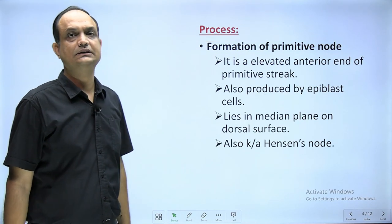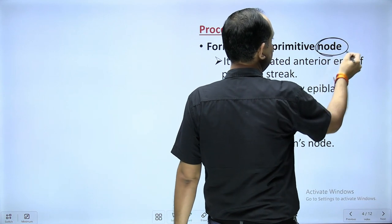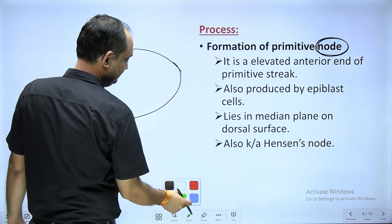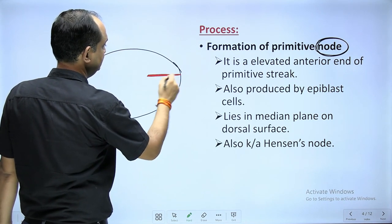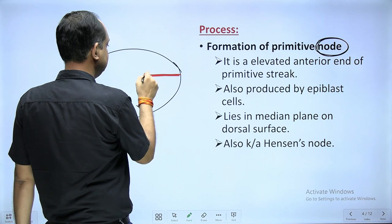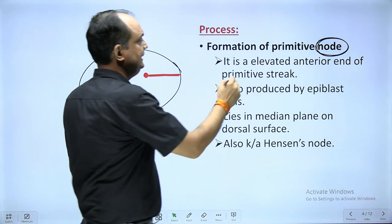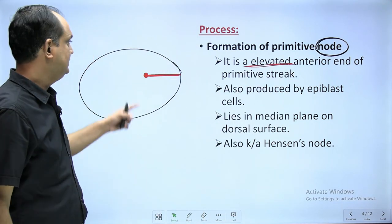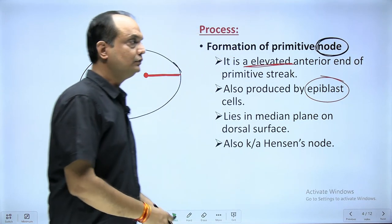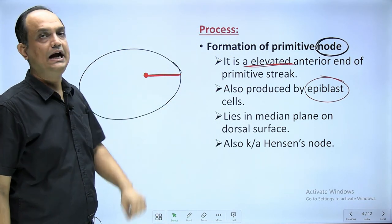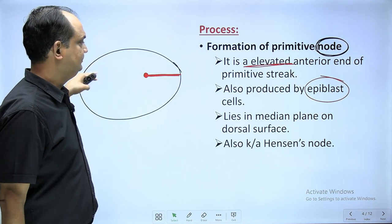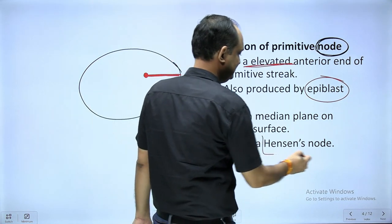In the second step, in the primitive streak, there is an appearance of an enlarged or dilated area known as primitive node. In the anterior end of the streak, there is a thickening or dilatation that appears. This elevated anterior end of the primitive streak is known as primitive node, and the cells of the primitive node also come from epiblast. Primitive node lies in the midline and is also known as Hanson's node.